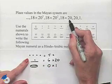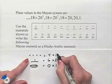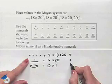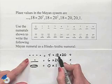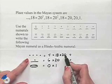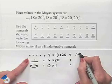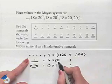This is 4 times 18 times 20. Now let's evaluate each of these. 4 times 18 is 72, multiply that times 20 and we end up with 1440. 6 times 20 is 120.